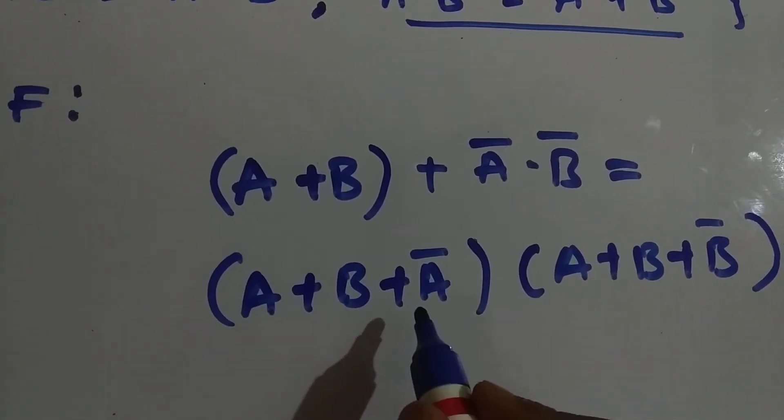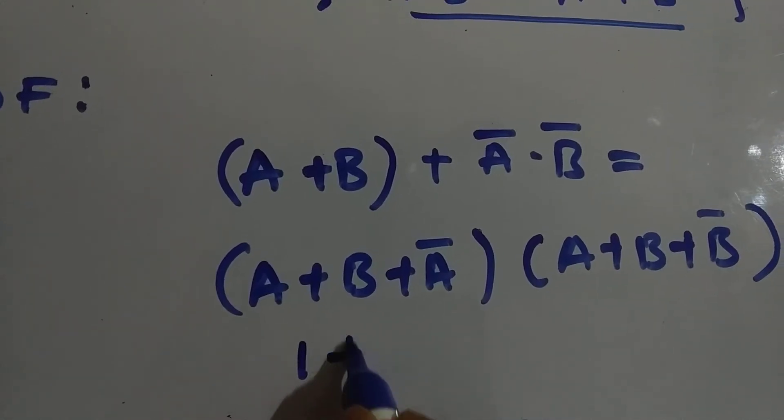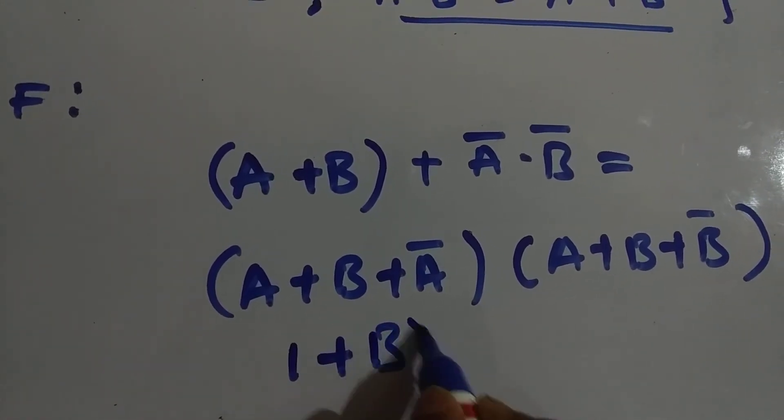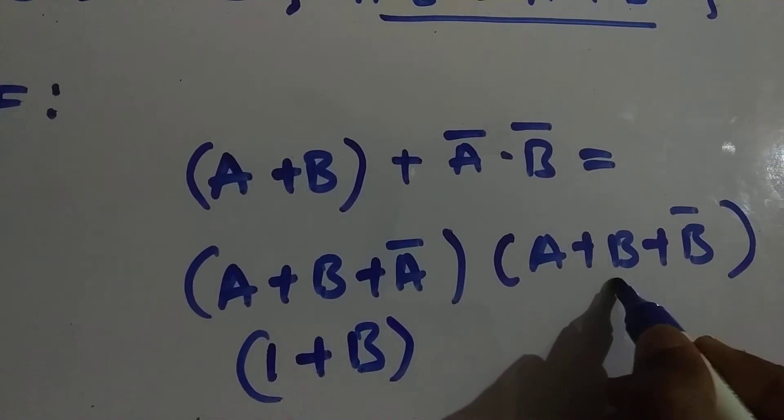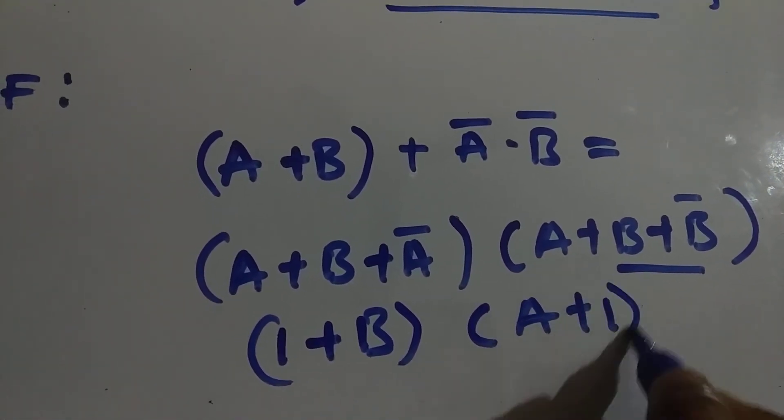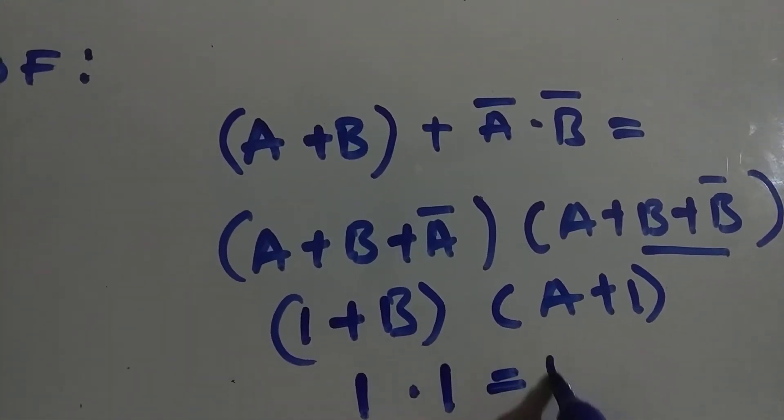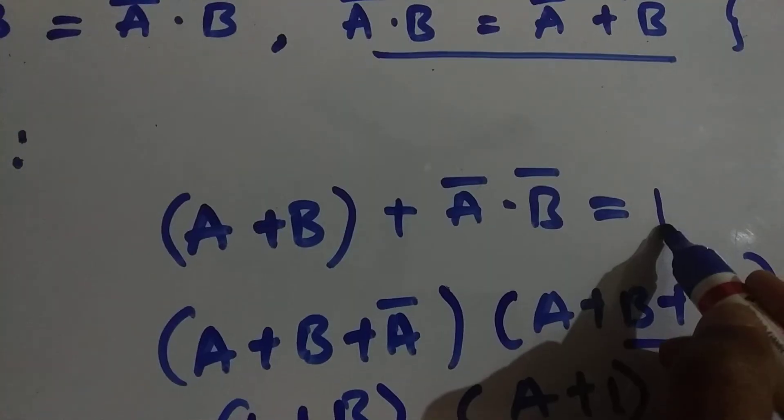Now we can see that A plus A bar is 1 plus B. Again here we have B plus B bar, which is 1 again. So A plus 1. From this we can say that 1 plus anything is 1. So 1 into 1 equals 1. The result is 1.